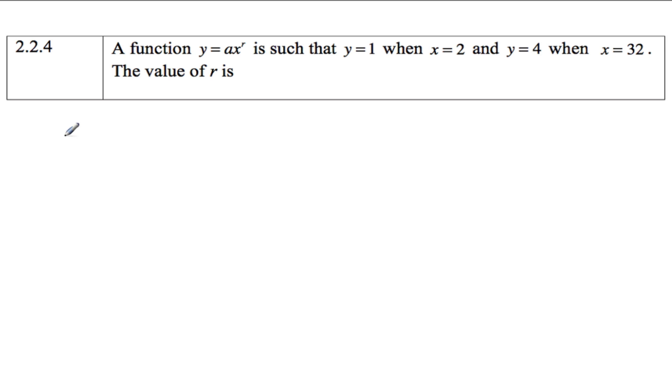So we have, substituting in the points, we have 1 equals a times 2 to the r, and we also have 4 equals a times 32 to the r.